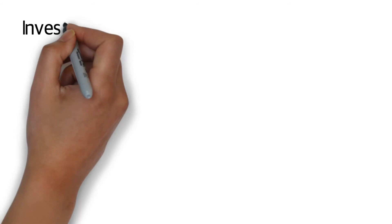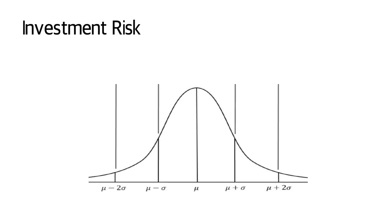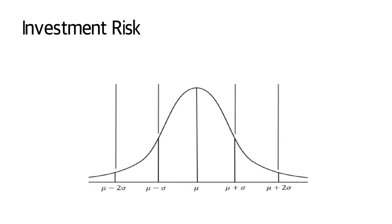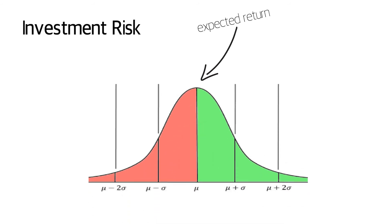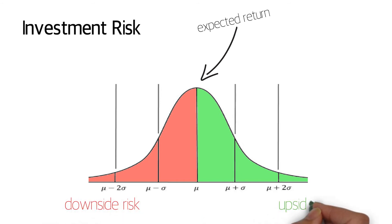So what is investment risk? The distribution of potential investment returns has a standard deviation, which is a statistical concept that is commonly used to measure investment risk. While the expected return is the most likely outcome, the actual return in a given month, year, or any period of time could be anywhere within this range. It is important to note that the standard deviation captures both the downside and upside risk of an investment. This means that your investment can yield both less or more than the expected return.